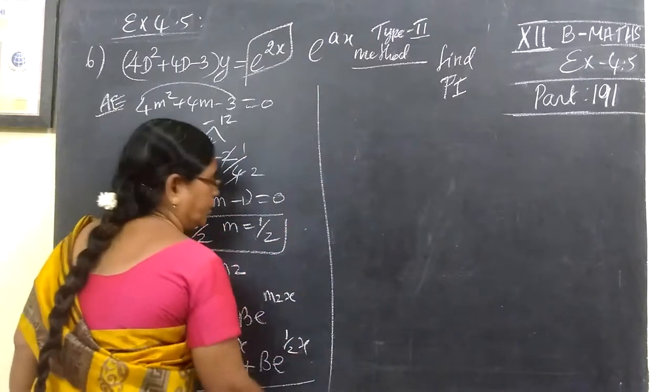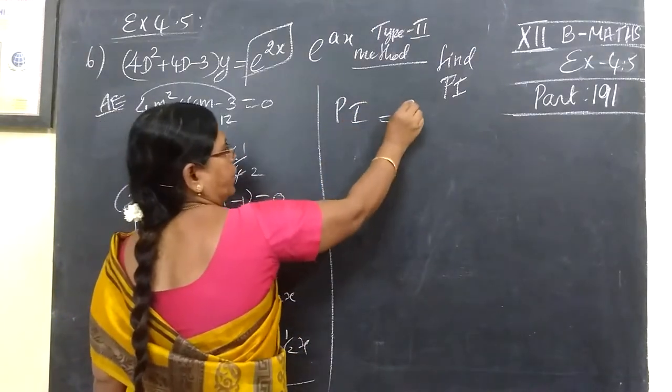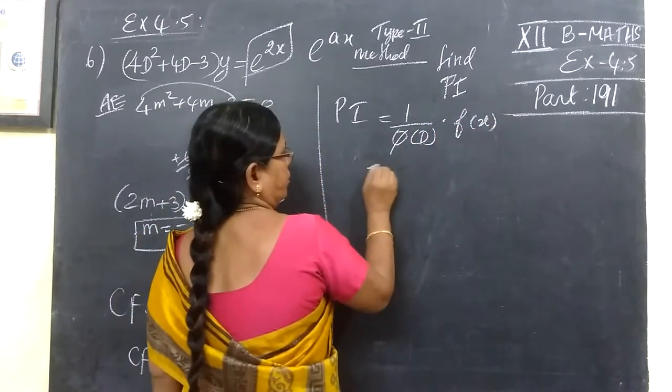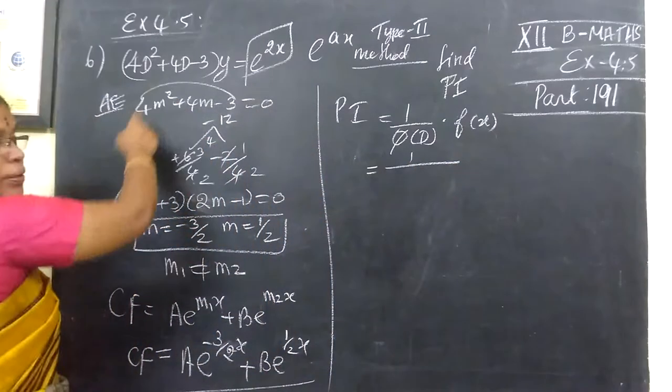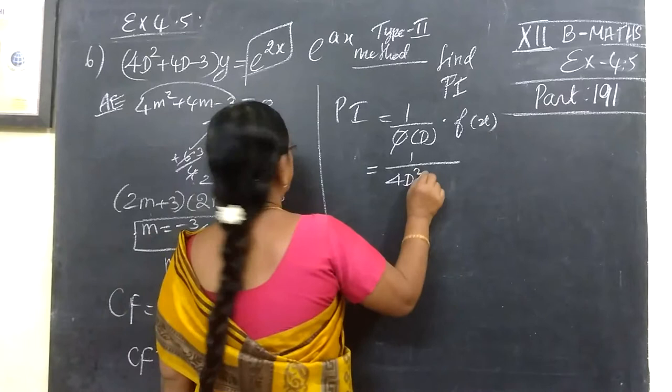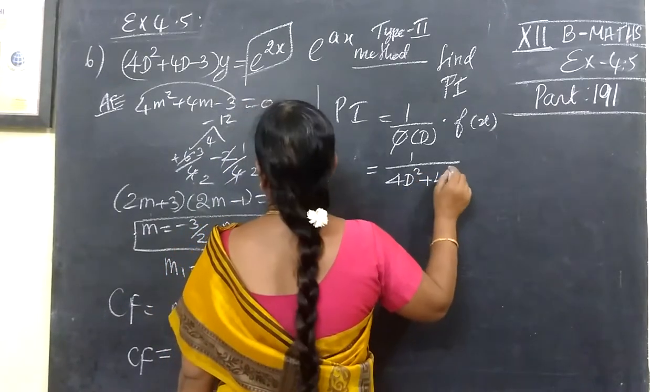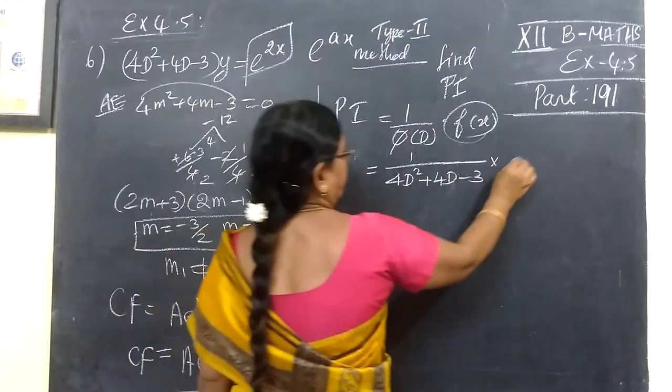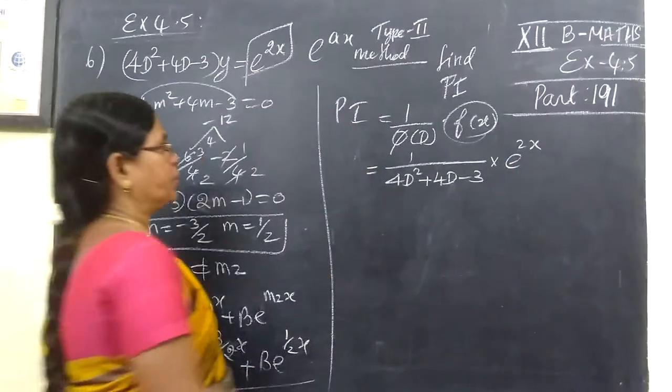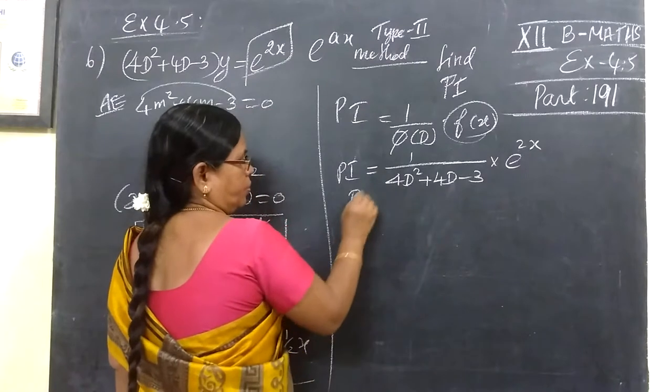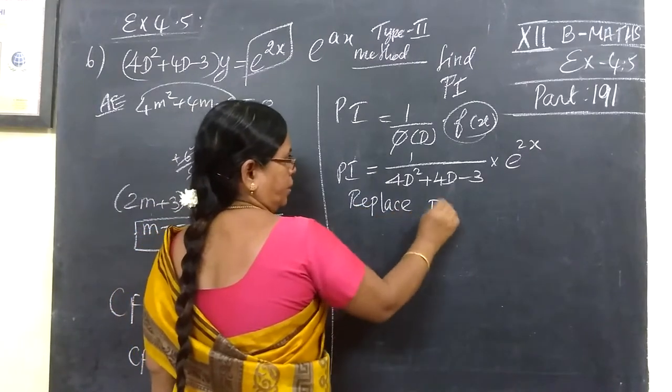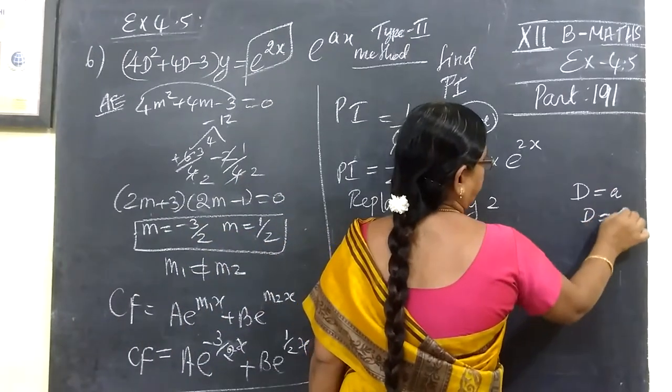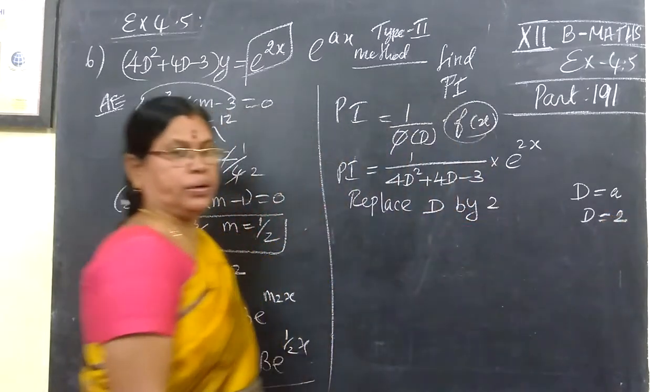The formula is 1 by PI of t into f of s equal to 1 by PI of t. Here is 4D² plus 4D minus 3 into f of s, and that is e^(2s). Now what's the command step in that: replace D by 2, that's D equal to A. A equal to 2, replace D by 2.